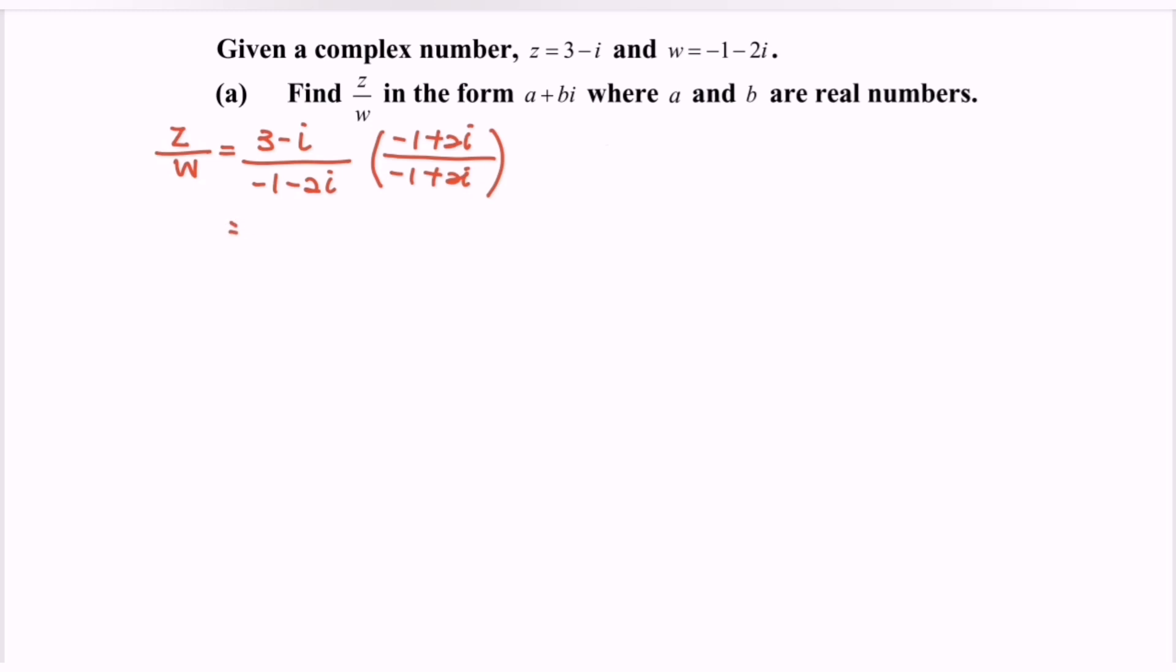Expanding, we have -3 + 6i + i + 2 over... For the denominator, when we have (a + bi)(a - bi), the multiplication of conjugates, we obtain the formula a² + b².